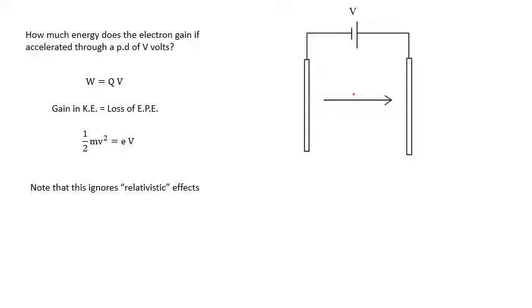Note that this ignores relativistic effects. Later on in this option we're going to talk about when things travel very very fast, they get heavier and some other weird things happen. But ignoring that, assuming that the mass of the electron doesn't change, so we're going to use the rest mass of the electron, which is 9.1 times 10 to the minus 31 kilograms. So a half mv squared equals eV.